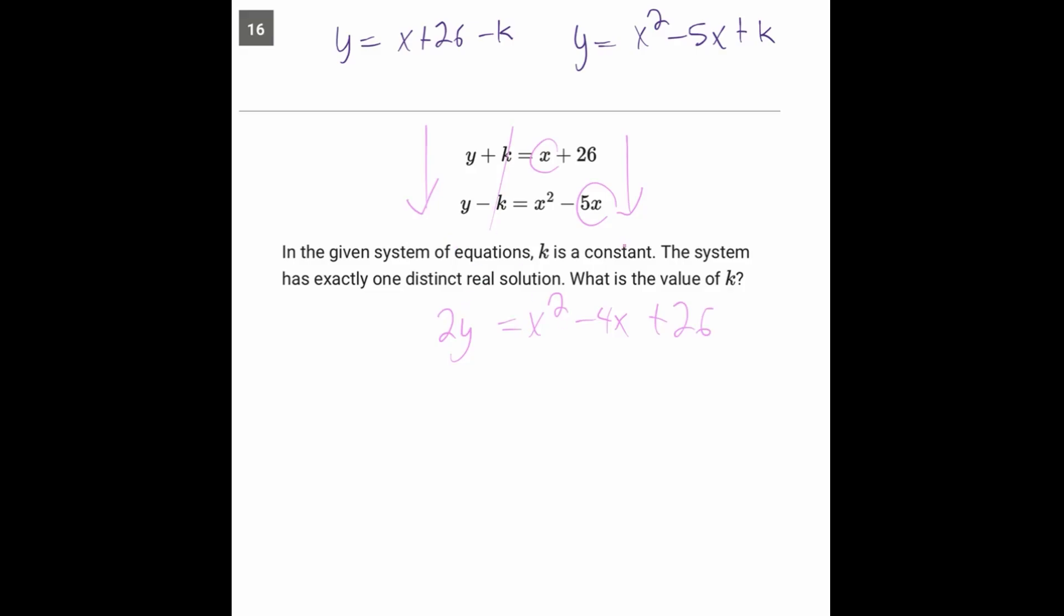And what's the question asking us for? It's asking us for the value of K. So as tempting as that is, we want to avoid doing that and just treat it like a regular intersection, get them both in the Y equals format, and then set them equal. So let's do that. X plus 26 minus K is equal to X squared minus 5X plus K.